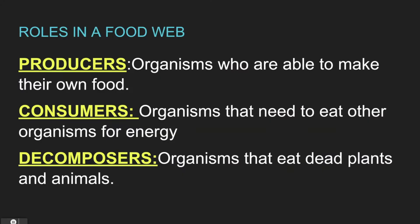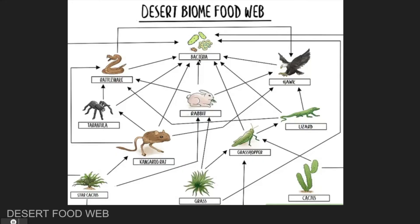The third role in our food web is decomposers. Decomposers are those organisms that eat dead plants and animals. Decomposers are very important in a food web because once animals or plants have died, they help break it down to tiny pieces that can return to the soil. In our desert food web, one of the decomposers is bacteria. We see how all the arrows of all the organisms lead to the bacteria, because once a rabbit, or the grass, or the grasshopper, or whatever organism dies, it will eventually be broken up by bacteria.